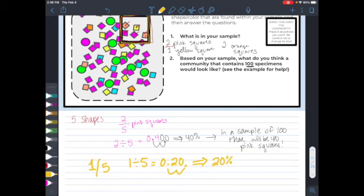Now I know that if I have a sample of 100, that 20 of them will be yellow squares. Because one fifth is 20%, and in a group of 100, 20% means that there will be 20 yellow squares.